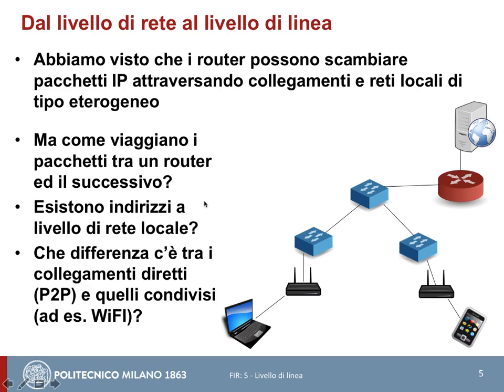Una delle prime cose da caratterizzare riguarda la tipologia dei collegamenti su cui queste trame viaggiano. Esistono collegamenti punto-punto, cioè cavi o fili che collegano il mittente al destinatario. Oppure esistono dei collegamenti fisicamente broadcast, in cui non esiste un cavo dedicato tra mittente e destinatario, ma il mezzo usato per trasferire la trama di livello 2 è un canale intrinsecamente broadcast, tipo WiFi. Cambiano i protocolli, le tecnologie e i servizi a seconda del tipo di collegamento data link.